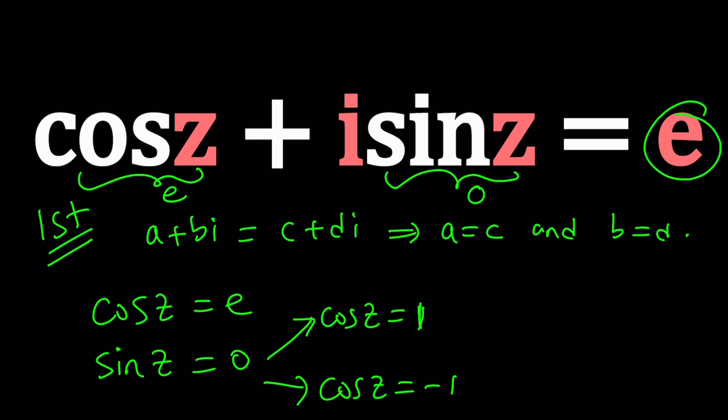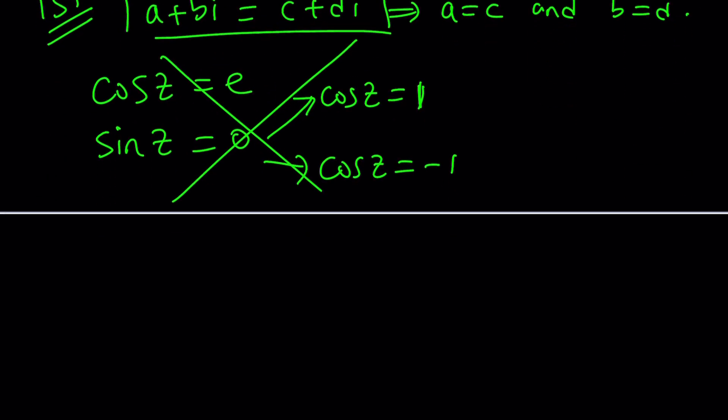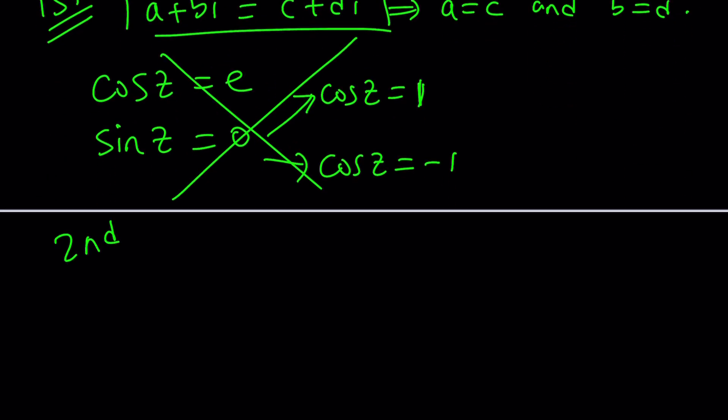This equation only holds if a, b, c, d are real numbers, and that's the very definition of a complex number. So this approach is definitely not going to work. Let's look at it from another perspective. The second approach.